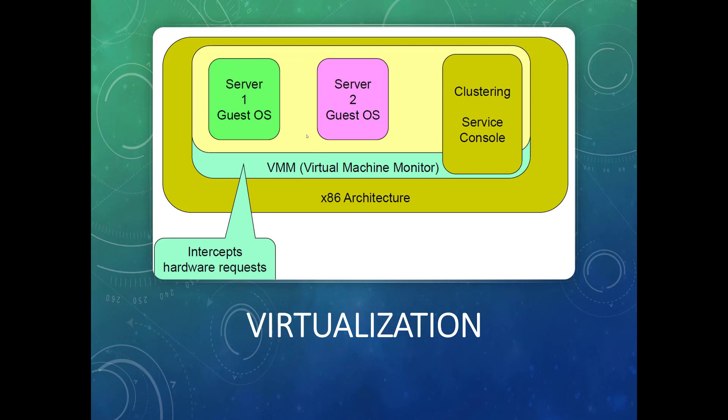Each virtual machine is contained within itself — nothing can get outside of that environment. They think they're separate computers but they're really contained within a software program. Each one does use some physical memory like RAM and hard drive space, though not as much as a standalone computer. The physical host machine needs to be fairly powerful — lots of RAM, hard drive space, and good computing power — because if you start multiple VMs simultaneously, they all drain your physical computer at the same time.